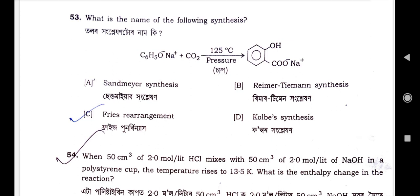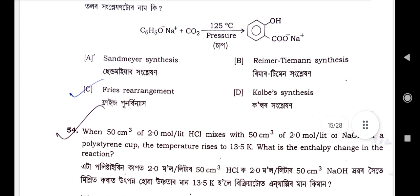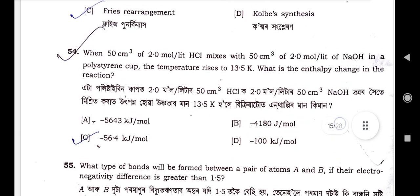Question number 53: What is the name of the following synthesis? C6H5O⁻Na⁺ plus CO2 at 125°C and pressure gives a benzene ring with –COO⁻Na⁺. The correct option is option C — Fries rearrangement.